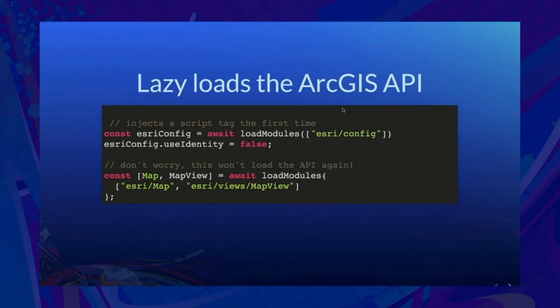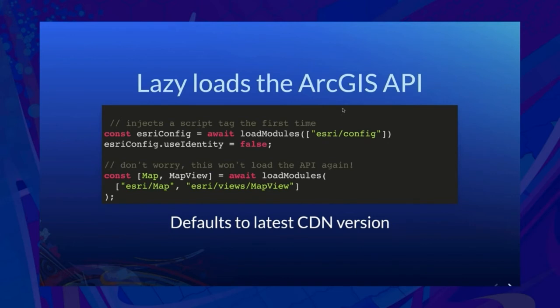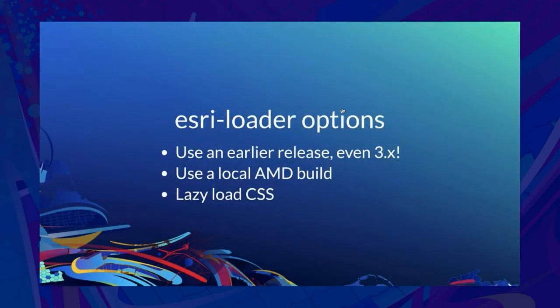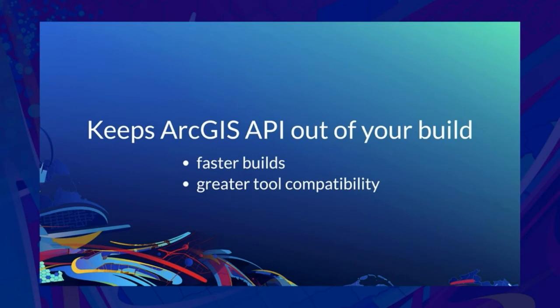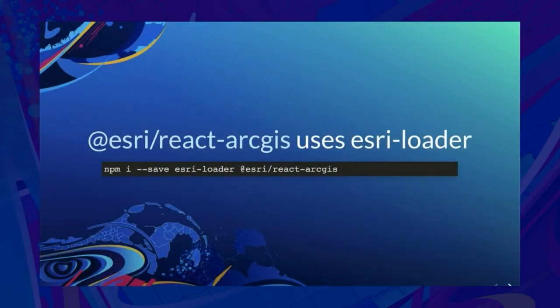Esri Loader is a package you can install from NPM or Yarn. It provides a function called loadModules, which takes an array of ArcGIS module names you want to use, and when they're ready, returns instances of those modules. The function signature will look familiar — it looks a lot like a call to the AMD require function, and in fact that's what it's doing under the hood. But loadModules also lazy loads the ArcGIS API for you — the first time it's called, it injects a script tag pointing to the latest version of the AMD build on Esri's CDN. You can also point it to an earlier release, a local AMD build, or configure Esri Loader to lazy load the ArcGIS CSS.